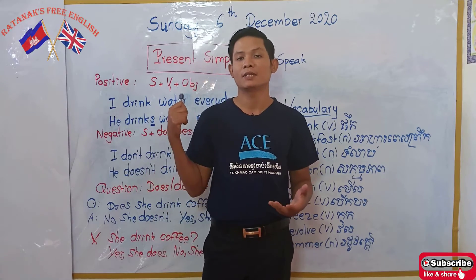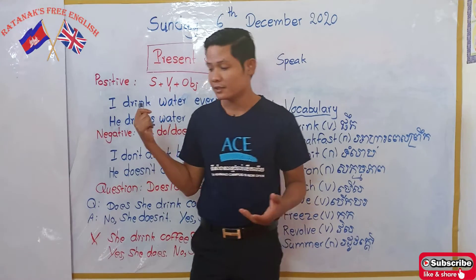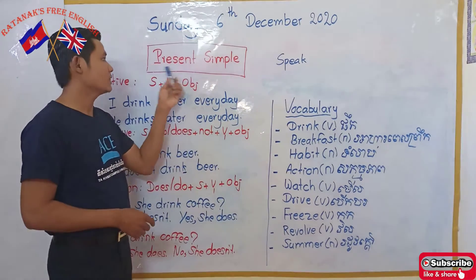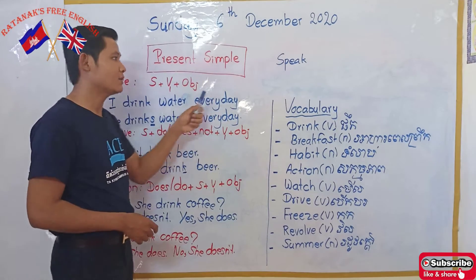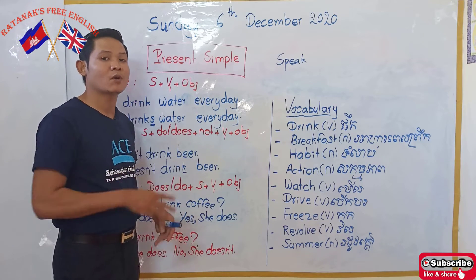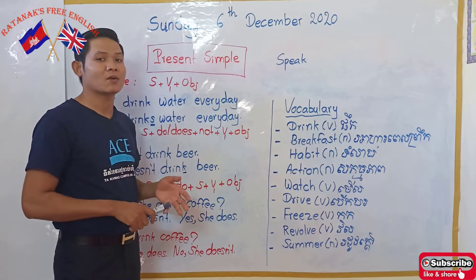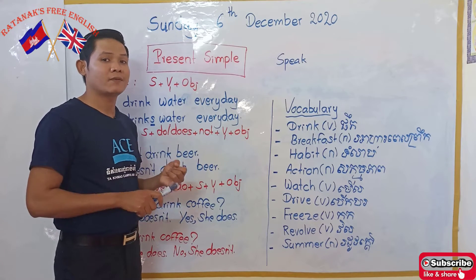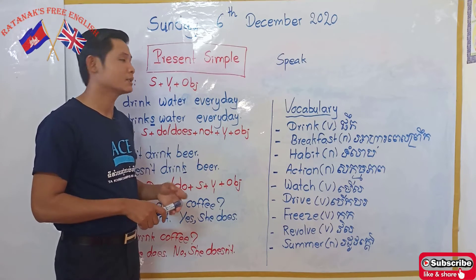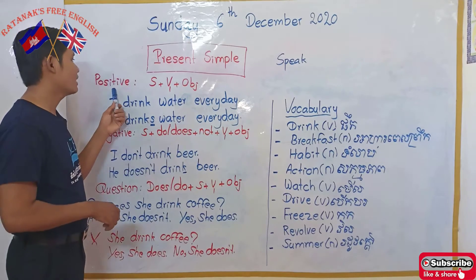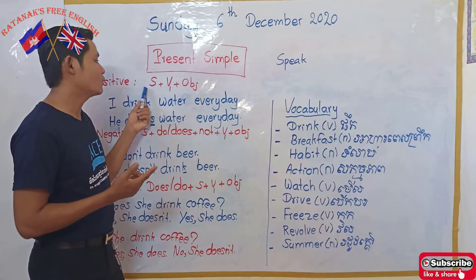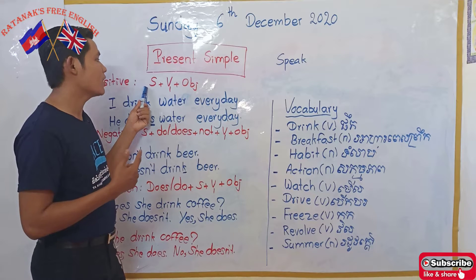Let's take a look at our main lesson. Today we will talk about present simple, and we will focus on three points: positive form, negative form, and the question form.